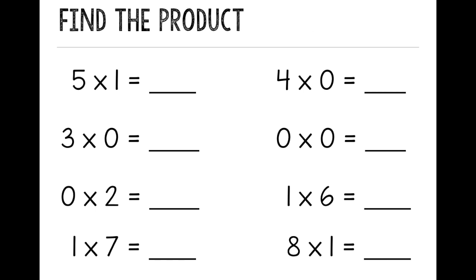Let's practice finding the product. We're going to start on the left-hand side with 5 times 1. And if I think about this, any number times 1 equals that number. So 5 times 1 would equal 5. Next we have 3 times 0. And my zero property of multiplication says any number times 0 equals 0. So 3 times 0 equals 0.